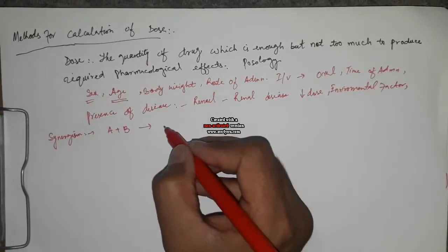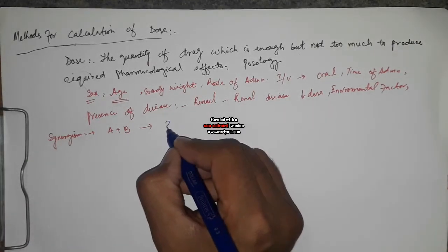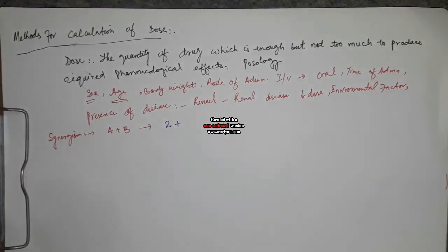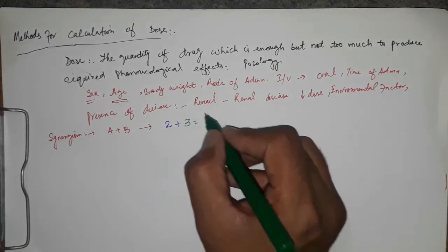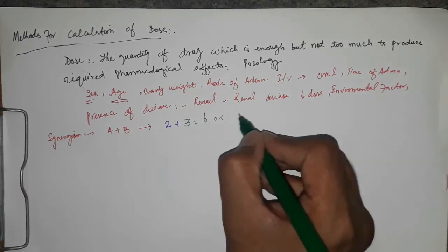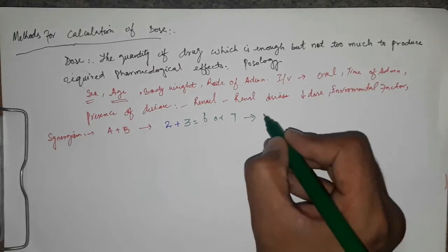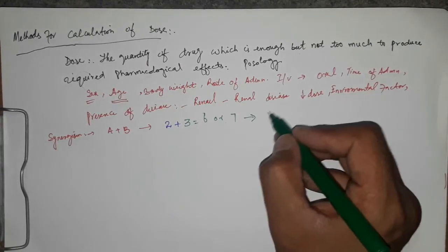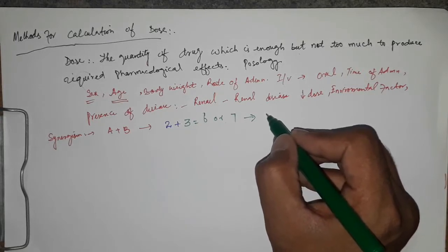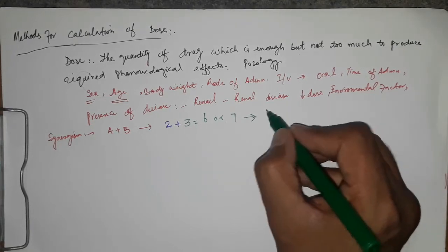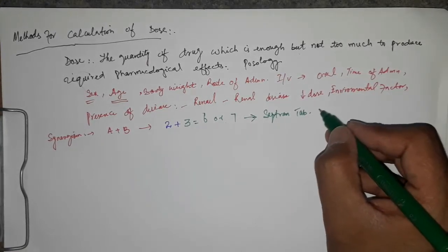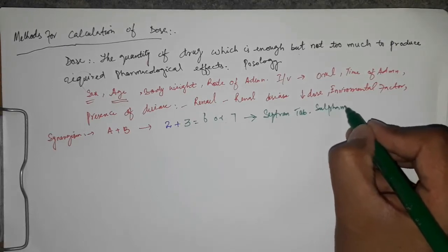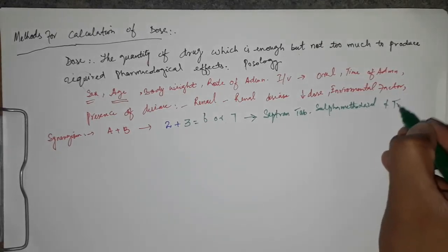If the effect of drug A is represented as 2 and drug B as 3, the expected sum would be 5, but instead the combined effect comes to 6 or 7 — this is called a synergistic effect. Synergism exists between many drug classes; for example, in Septrin DS tablets, there is a synergistic effect between sulfamethoxazole and trimethoprim.